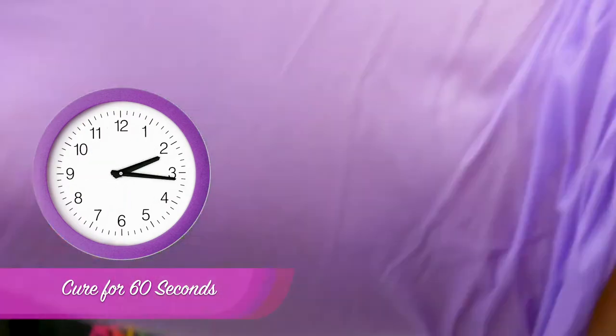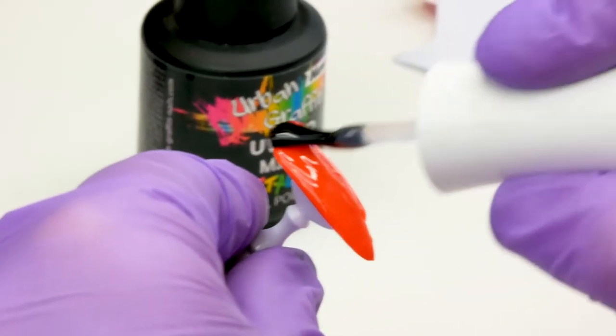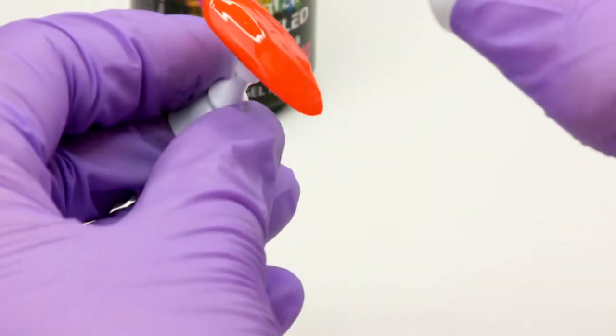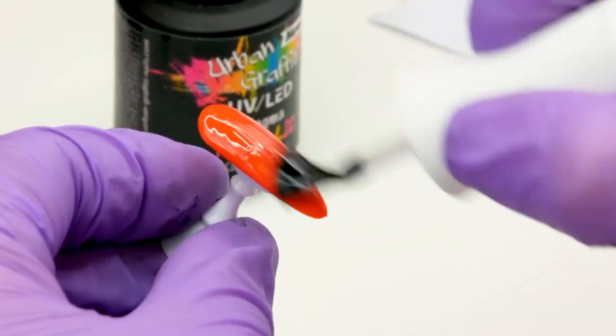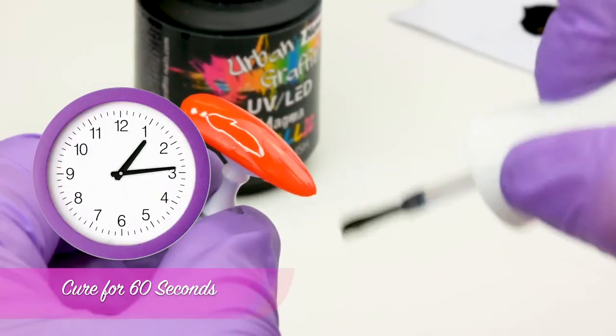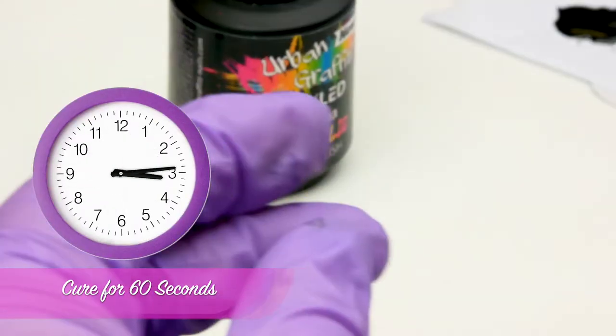Pop that in the lamp for 60 seconds. Now with our orange. Again with this one we need to go in with the Urban Graffiti Top Coat because we're going to use a metallic gel polish on top. It needs to go on a shiny surface, so pop that in the lamp for 60 seconds.